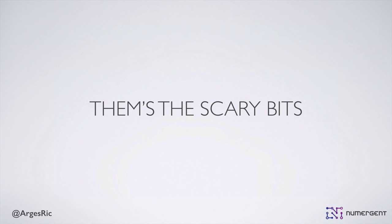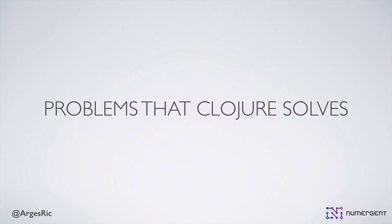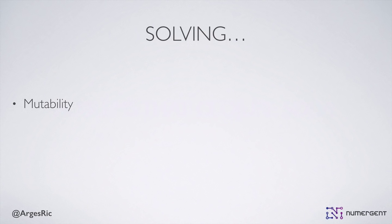That's the scary bits. There's nothing really beyond the unfamiliarity and the somewhat obtuse documentation that you really have to worry about when coming to Clojure. So let's talk about the problems that Clojure solves. As I mentioned, the big ones are mutability first, then inconsistency, and massive syntax. And yes, it's going to look weird, but that's because it's trying to approach these things.